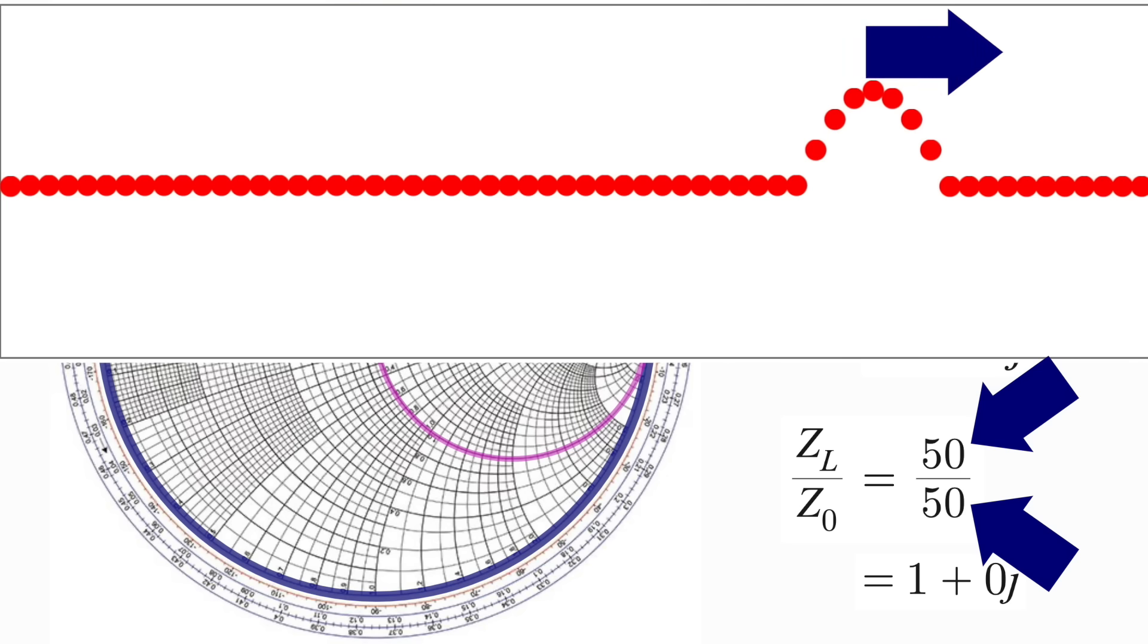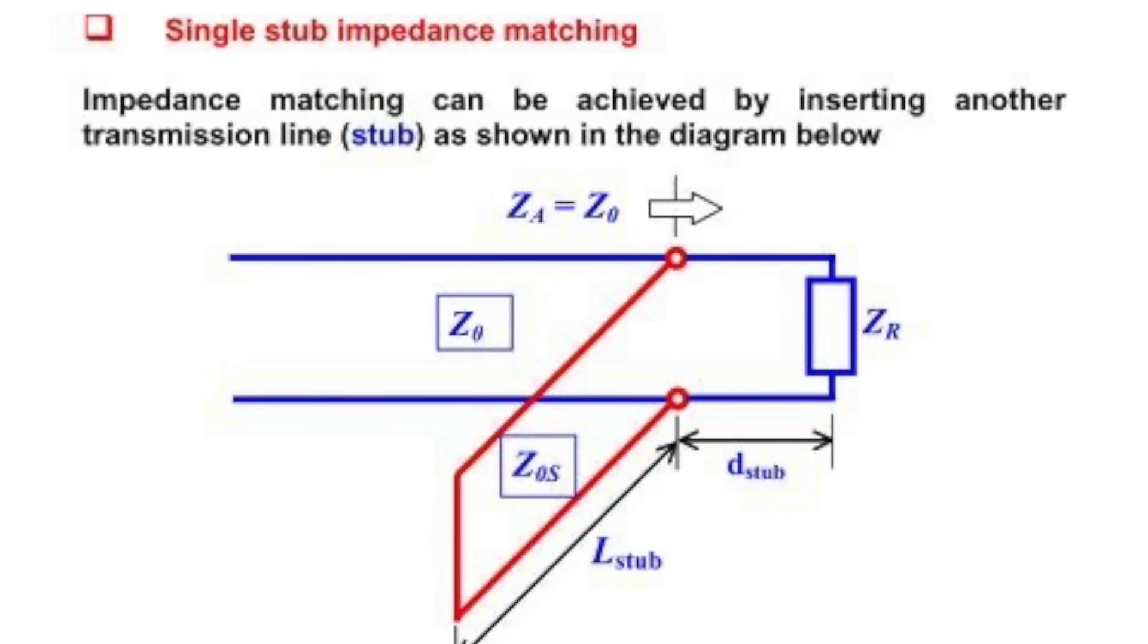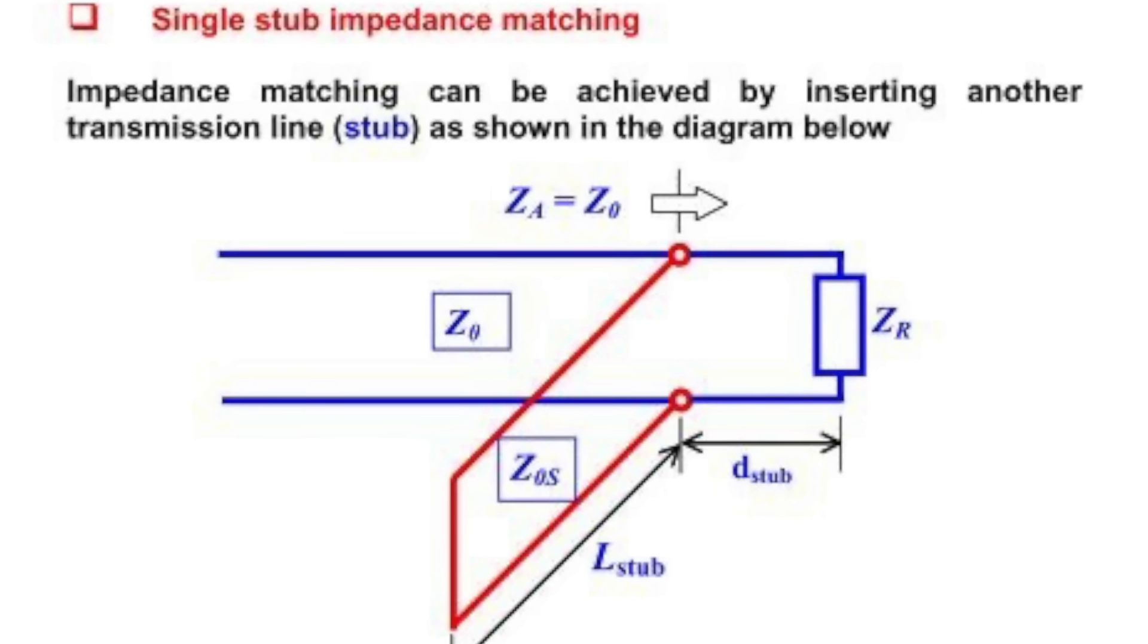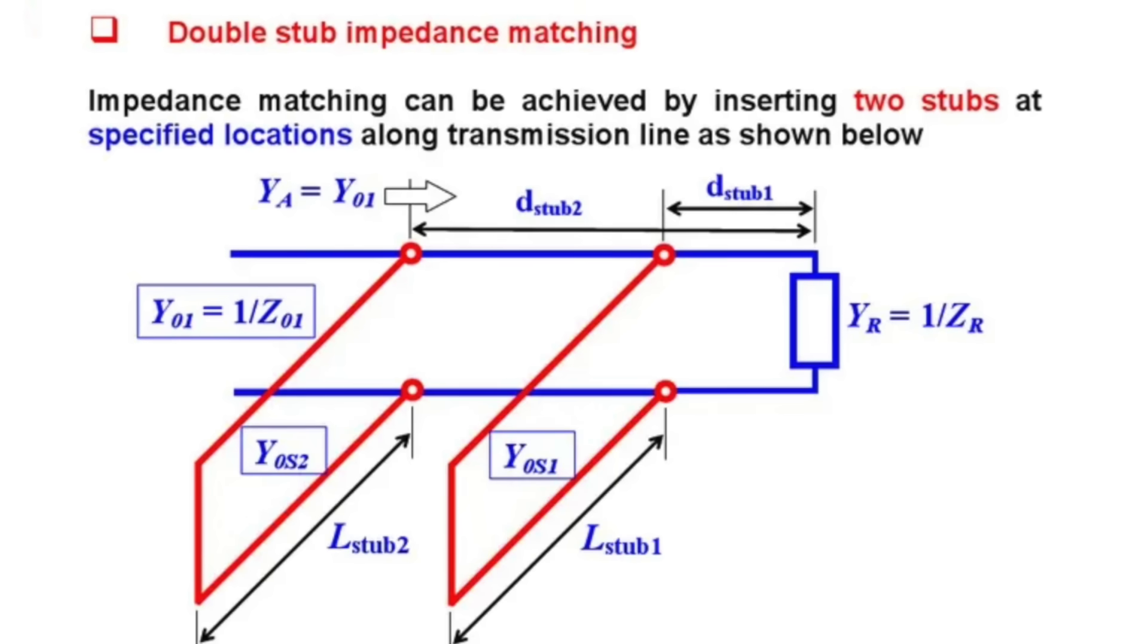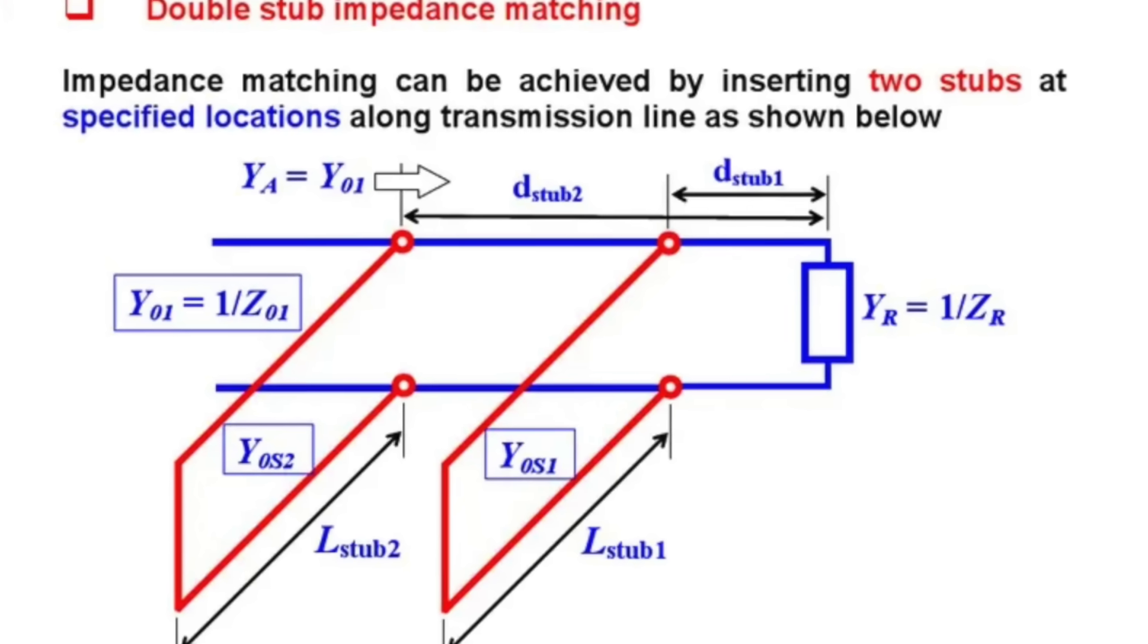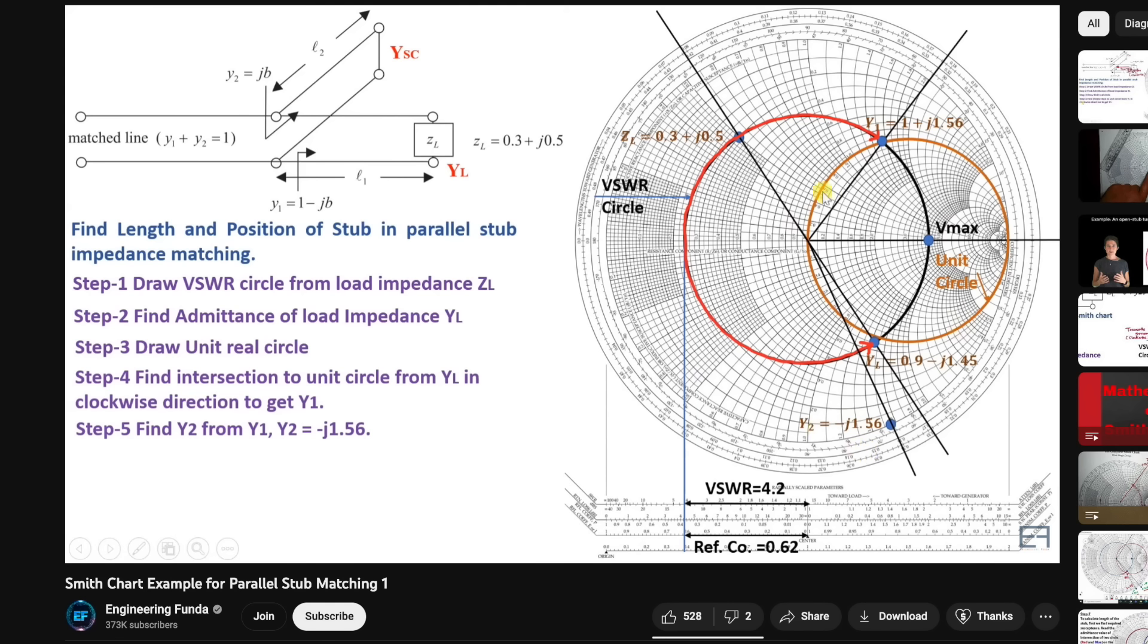And this is actually the real use of the Smith chart. When we have mismatched impedances that cause reflections, we can add things to the circuit that make the impedances more closely matched, allowing more power to reach what we want, the load. And the Smith chart is what helps with that, telling us what we need to add to minimize the reflections.